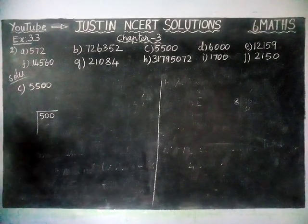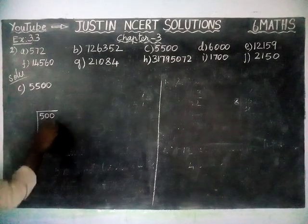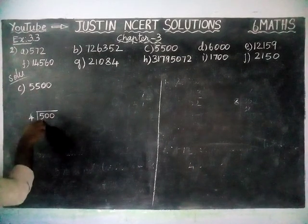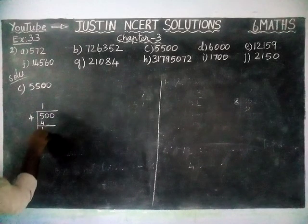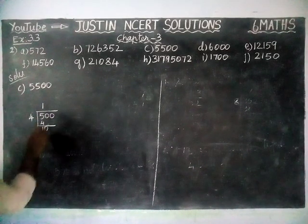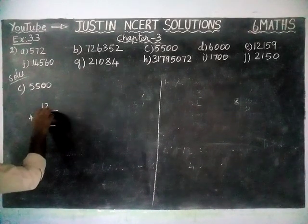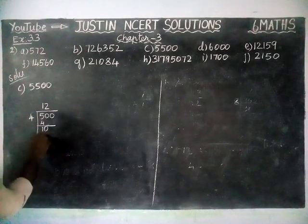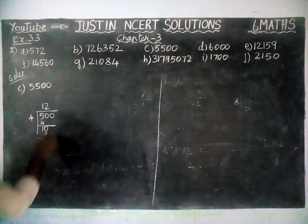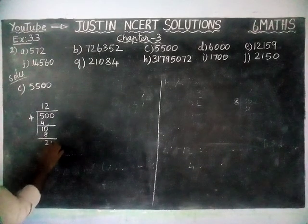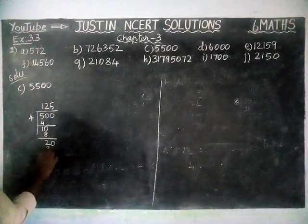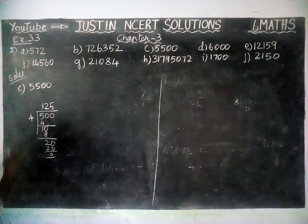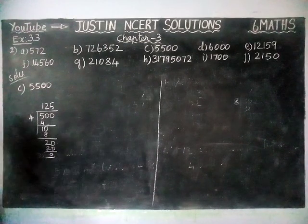I will show the proof also. Dividing 500 by 4: in 5, we have one 4, remaining 1, bringing down 0 gives 10. 2 fours are 8, remaining 2, bringing down 0 gives 20. 5 fours are 20, remaining 0. So this number is divisible by 4.